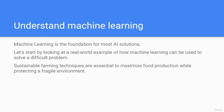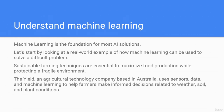Sustainable farming techniques are essential to maximize food production while protecting a fragile environment. The Yield, an agricultural technology company based in Australia, uses sensors, data, and machine learning to help farmers make informed decisions related to weather, soil, and plant conditions.